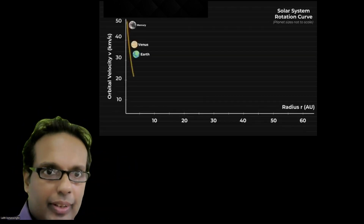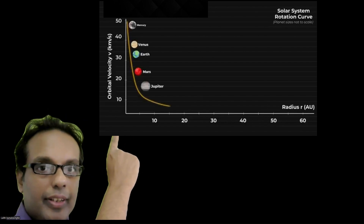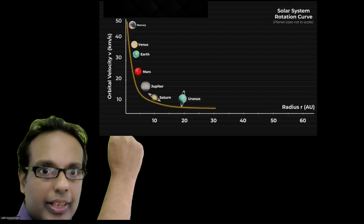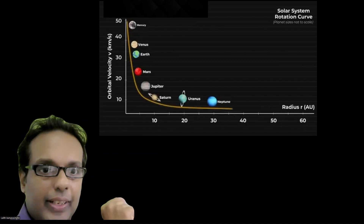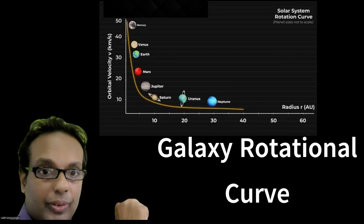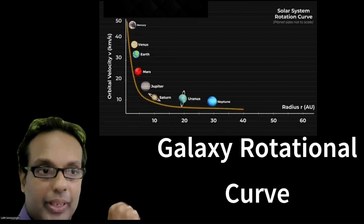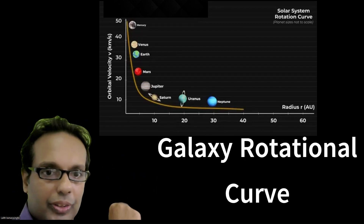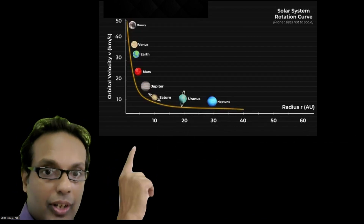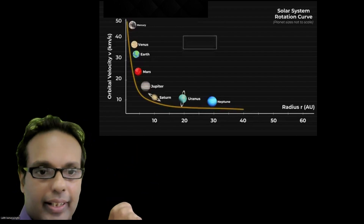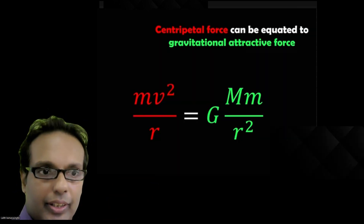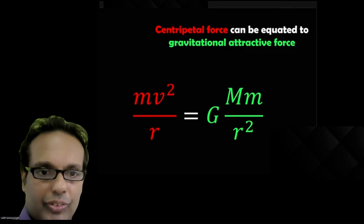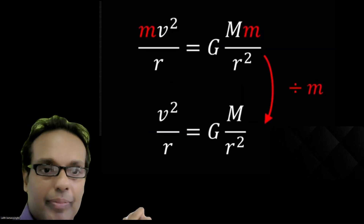First we will check a rotational curve from our solar system. When a planet goes further away from the Sun, the rotational speed will decrease. Rotational speed is inversely proportional to the square root of the radius. We can easily prove it using centrifugal force equal to gravitational force and simplifying it.